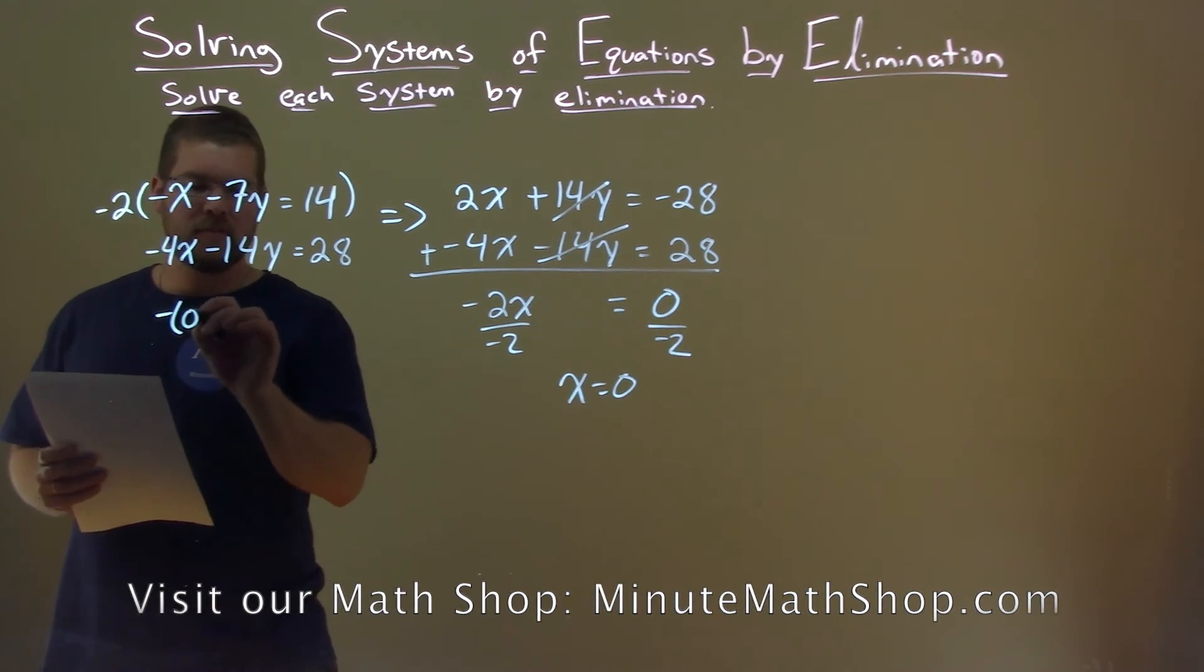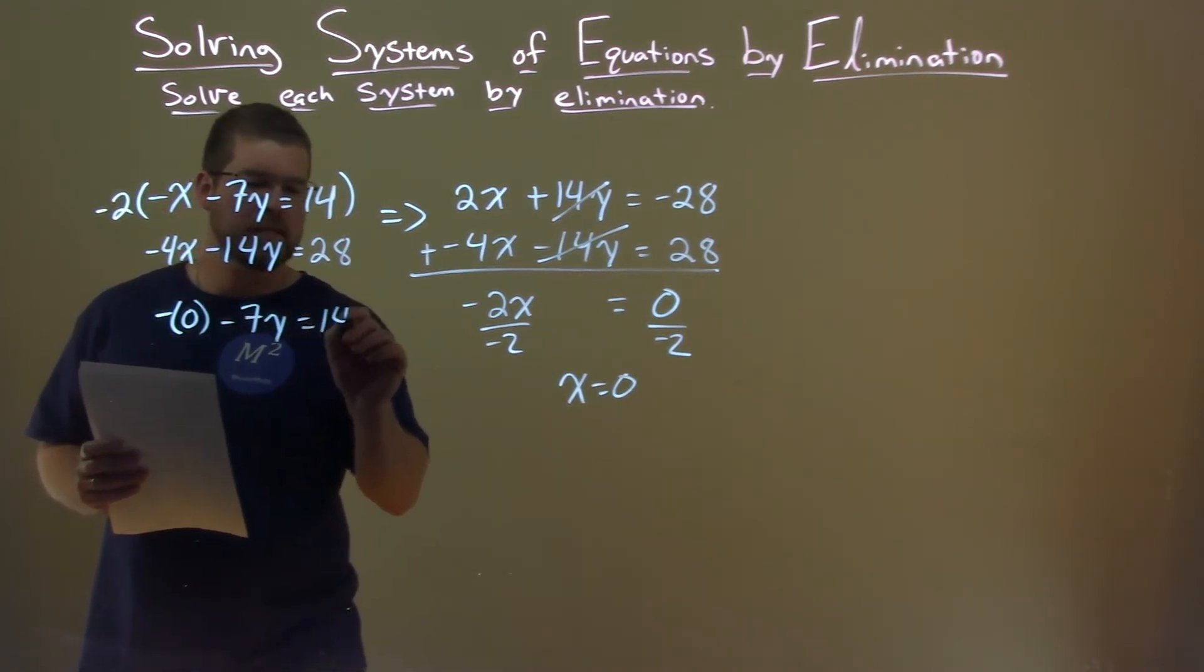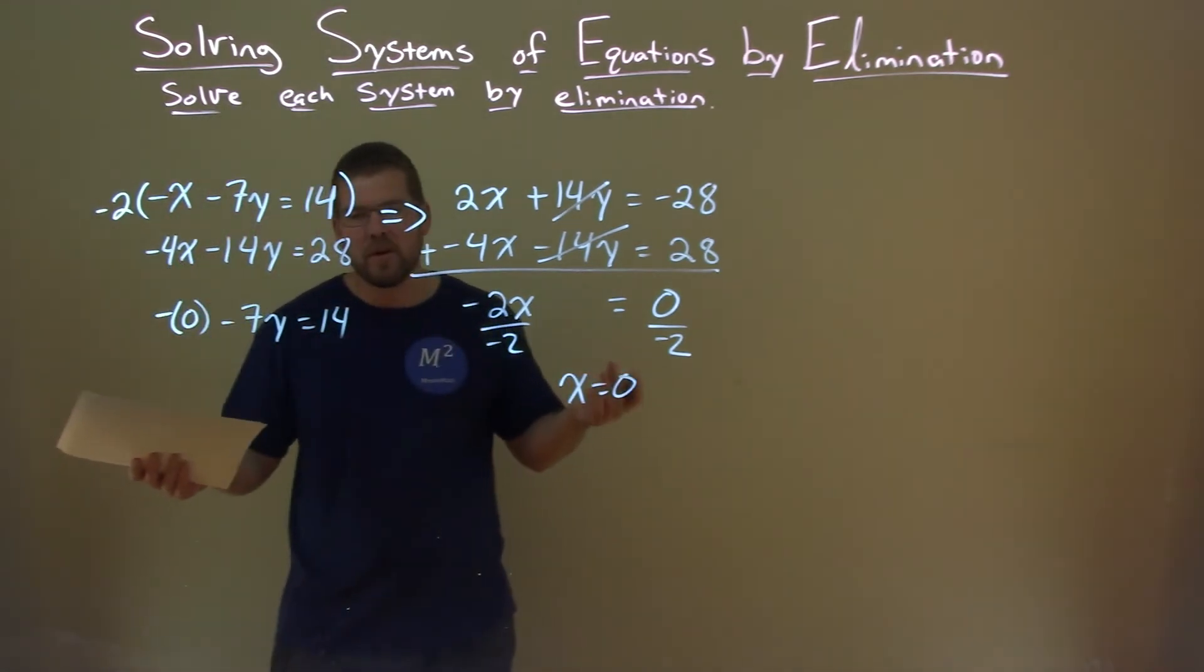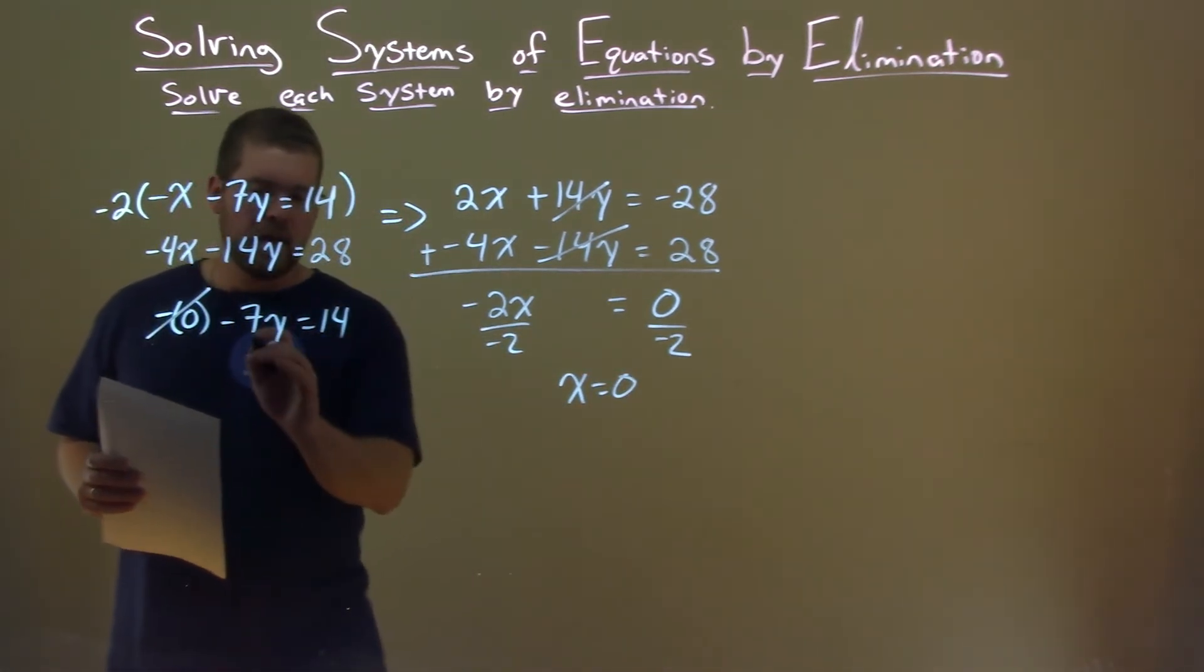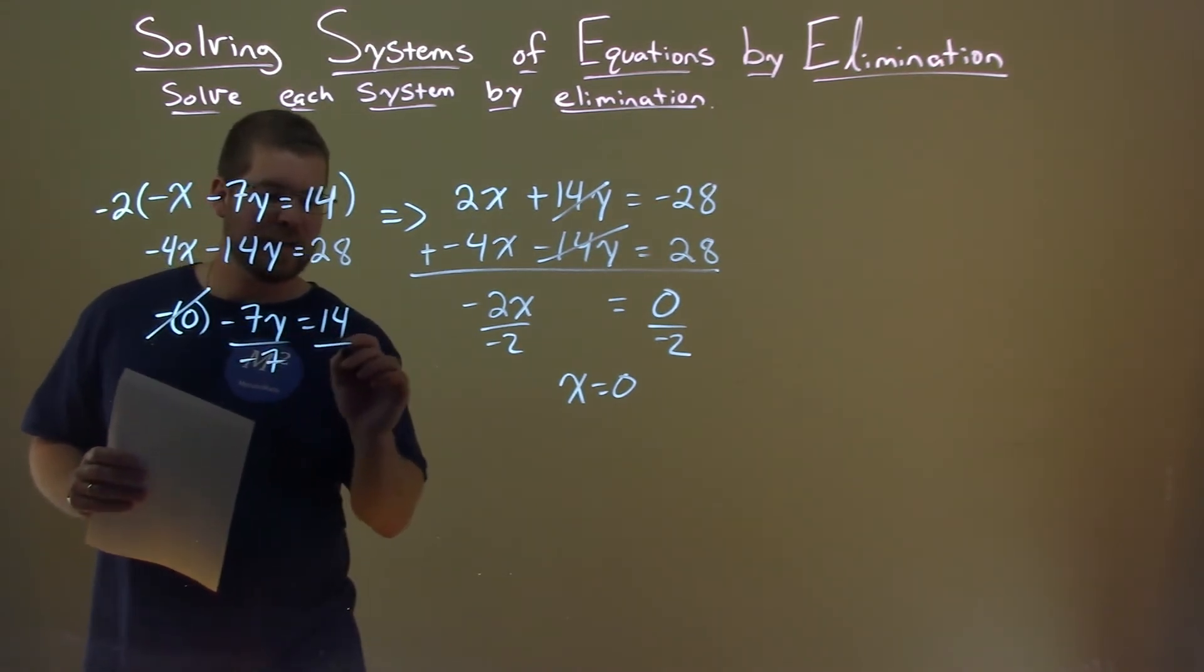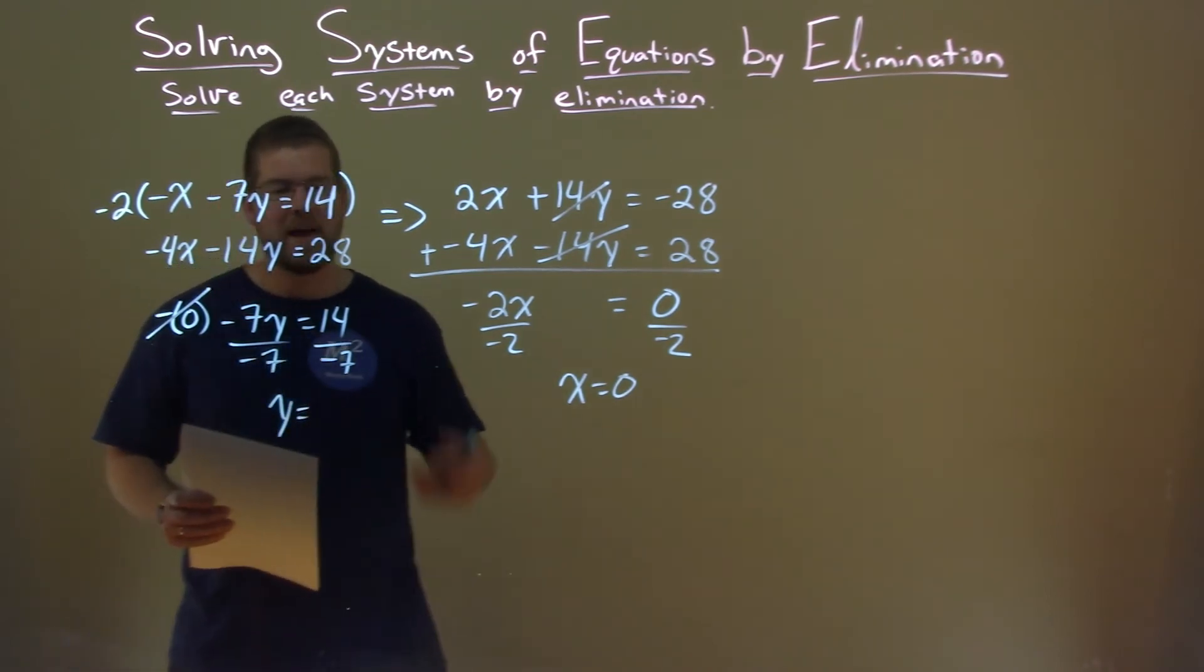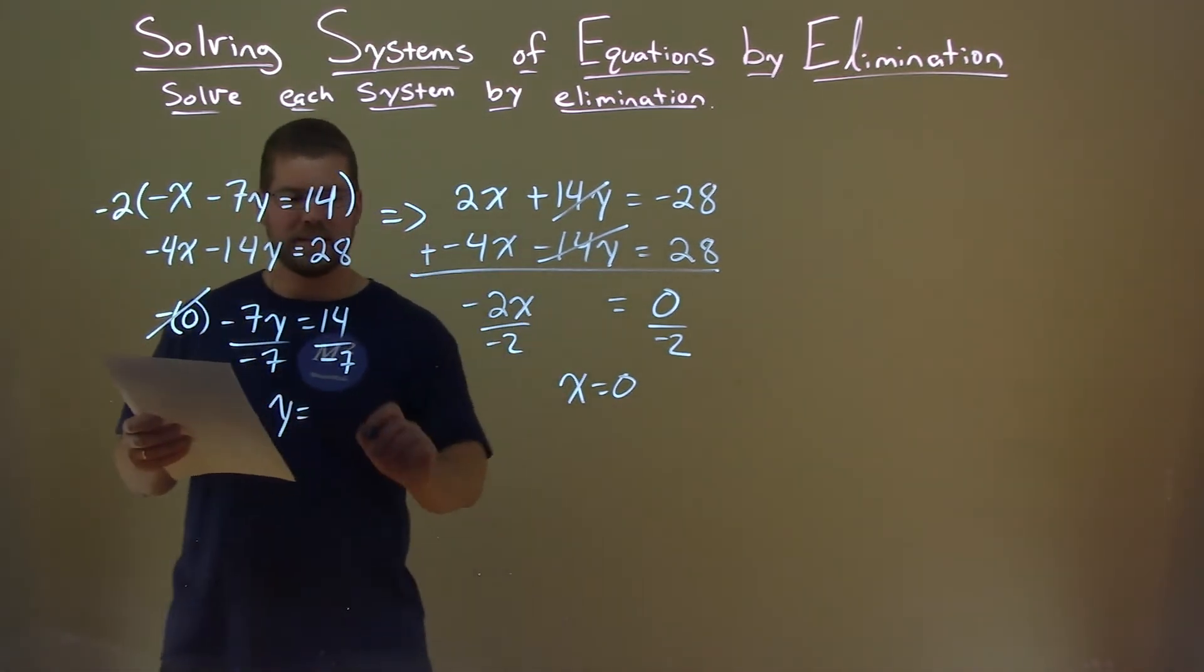0 in for x so we have negative 0 minus 7y equals 14. Well, we can't really have a negative 0 so it's just 0, don't need it. We have negative 7y equals 14. Then I divide both sides by negative 7, that's the opposite of multiplication. y is by itself and 14 divided by negative 7 is a negative 2.